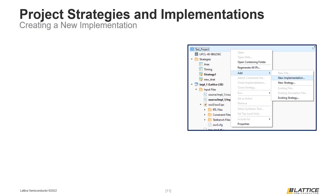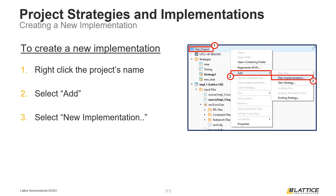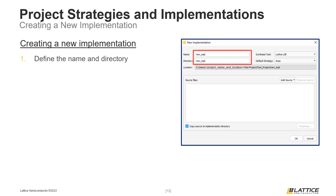There can be multiple implementations in a project. One way to add an implementation is to create one from scratch. To begin, right-click the name of the project at the top of the file list tab. From the drop-down that appears, select Add and then New Implementation. This will open the new implementation creation window. The first thing to do is define a name and directory for the new implementation.